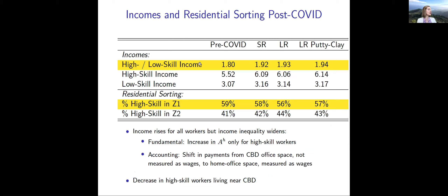Regarding income inequality: the pre-COVID ratio of high-skilled to low-skilled income is the baseline. It goes up to about 1.92 in the short run and 1.93 in the long run — about an 8% increase. The reason is that the increase in total factor productivity primarily benefits high-skilled workers because they're the ones who can work from home. There is some increase in income for low-skilled workers because they're a complement in the production function to high-skilled labor. High-skilled workers are also willing to live further into the suburbs since they're not commuting as frequently, so their share in zone two goes up.